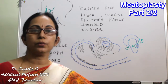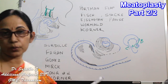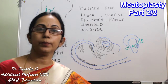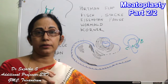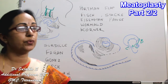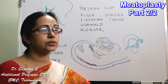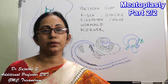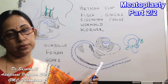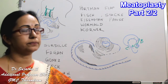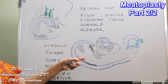As I already mentioned, we can do meatoplasty by an endoaural approach or by a postaural approach. The approach depends upon what you choose for doing a mastoidectomy. Especially in case of an inside-out mastoidectomy, you can prefer an endoaural approach, or the classical postaural approach.